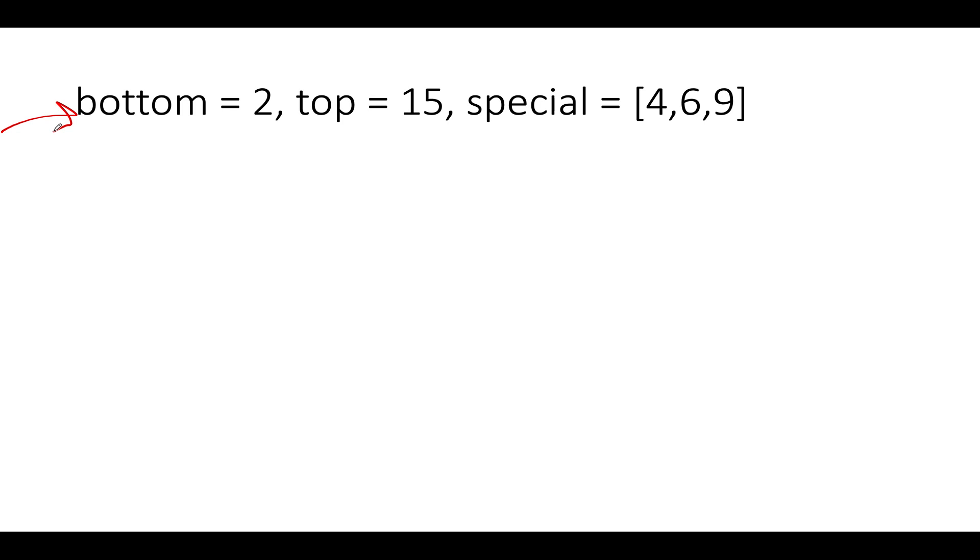Now let's get started. I have slightly changed the example so that you get a good hold of the concept. The bottom one is 2, the top one is 15, and special floors are at 4, 6, and 9. So what we are going to do, we will create a few simple variables. The first one is the start, the second one is the end, and the third one is the answer.